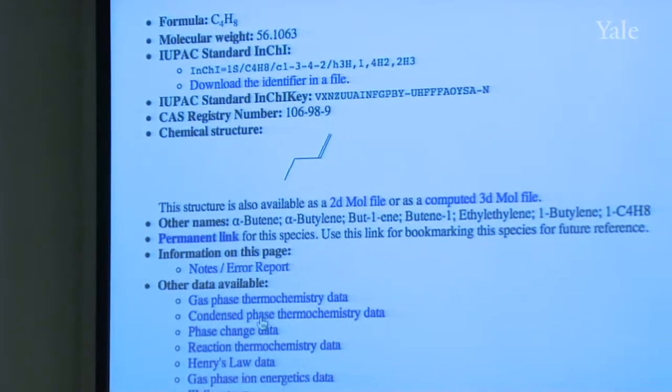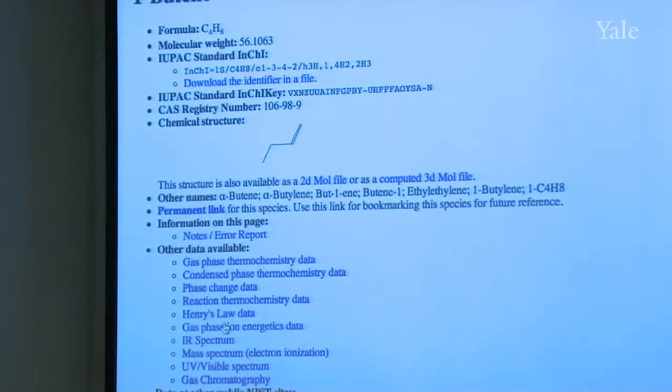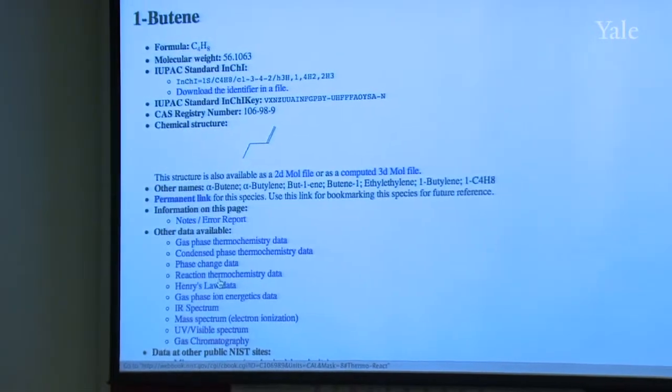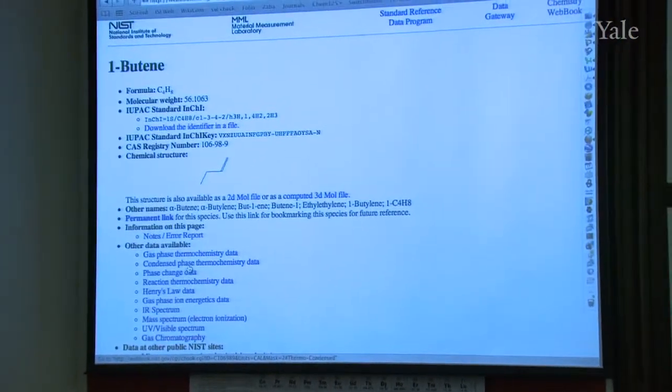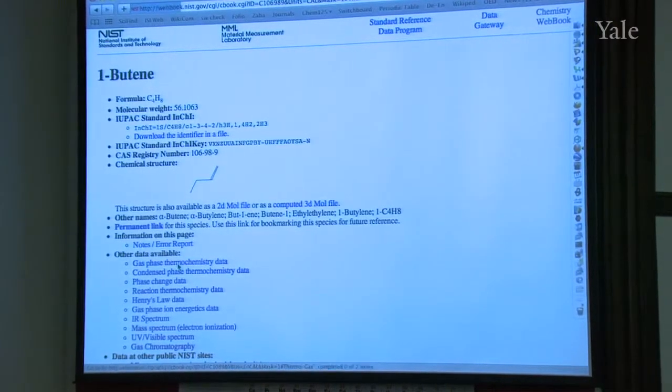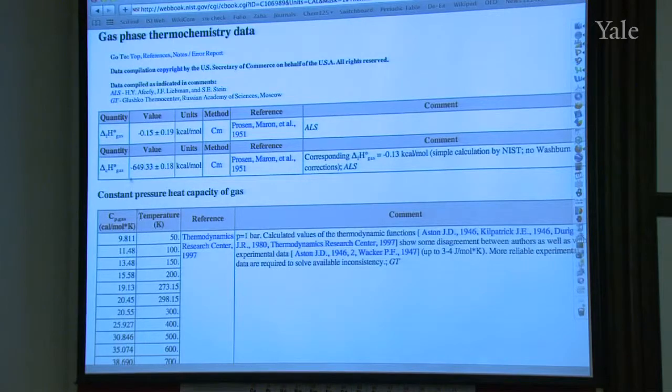Let's just look at 1-butene and see what kind of information is available. So we see there's all kinds of data available here. Gas phase thermochemistry, condensed phase thermochemistry, phase changes, reaction thermochemistry. That's particularly interesting. But let's first look at gas phase thermochemistry. So here we see the heat of formation in the gas phase is almost zero. It has about the same energy as the elements graphite and hydrogen do. If you look at the heat of combustion, it's this. And what's particularly valuable is you can see how well it's known, what the error limits are. These data have been evaluated by ALS, which is Alfievy, Liebman, and Stein.